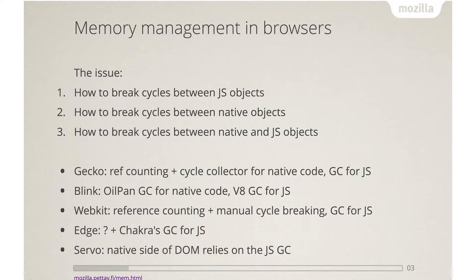Now about one of the topics: memory management. This is about DOM and JavaScript, not anything related to graphics. The issue that browsers face is that once you have allocated JS objects or native objects, how do you release the memory? There are cycles between JS objects, cycles between native objects like in the DOM tree, and then the trickiest ones are cycles between native and JS objects.